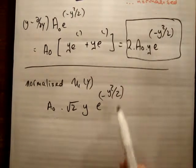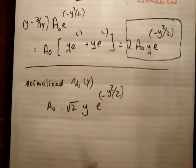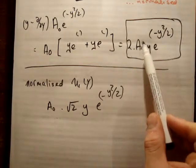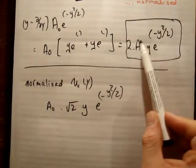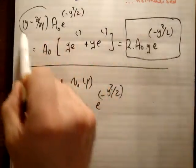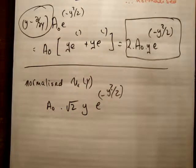So you can see that the normalized U1 of Y is actually the root 2 times smaller than the un-normalized one. And we got the un-normalized one by applying our creation operator on it. So the creation operator was incorrect by a factor of root 2.